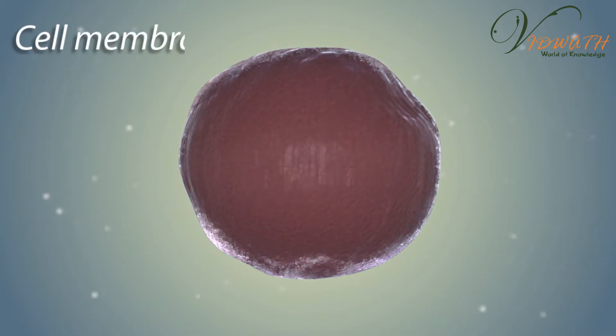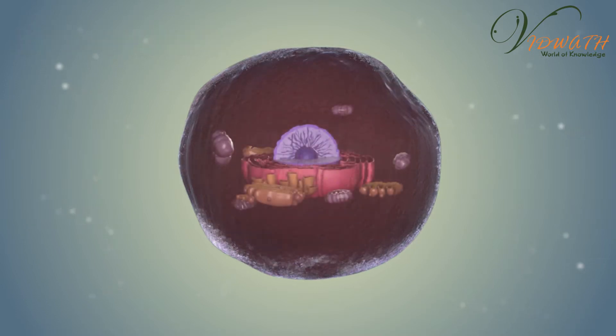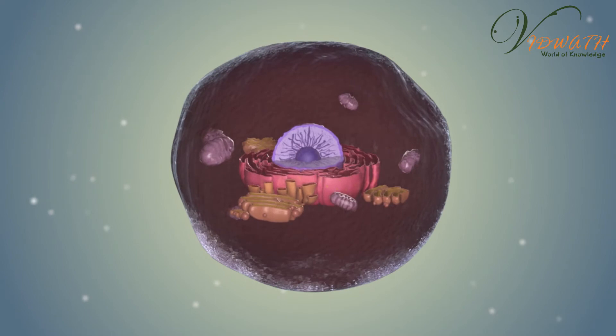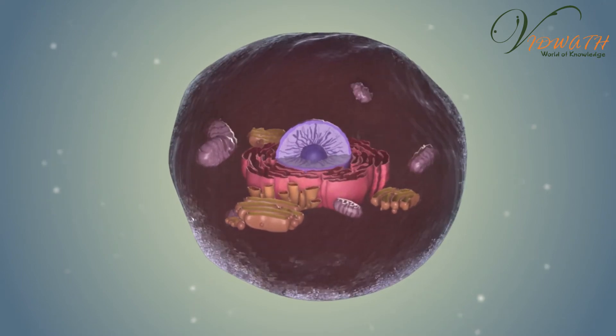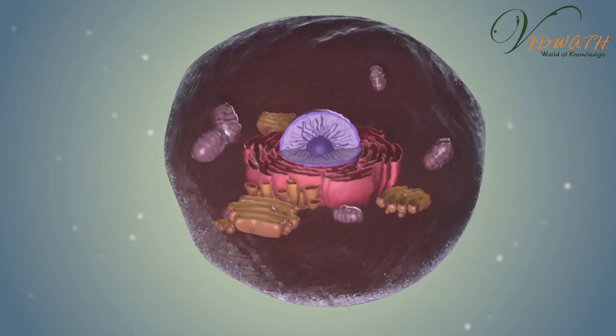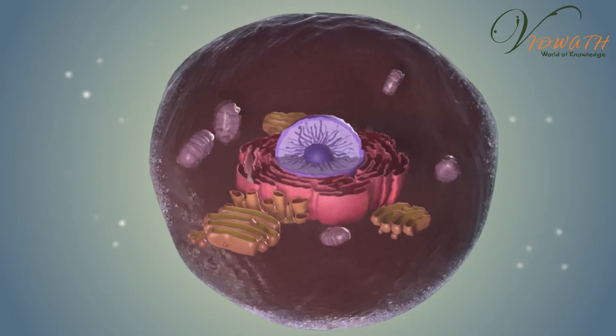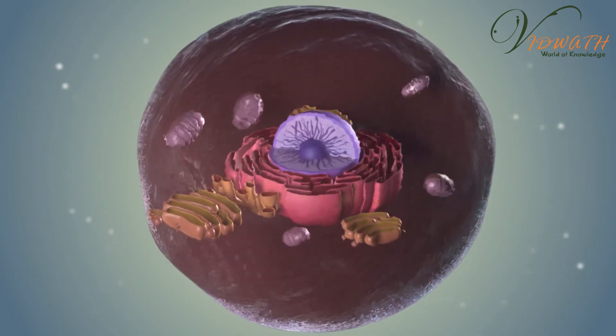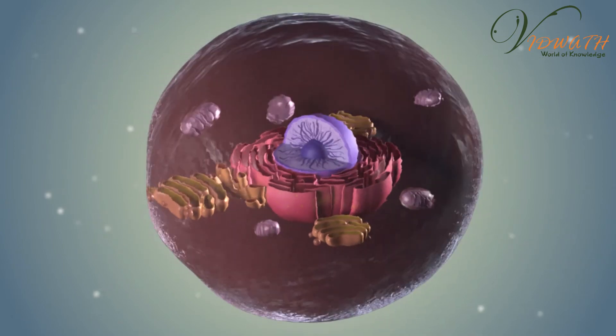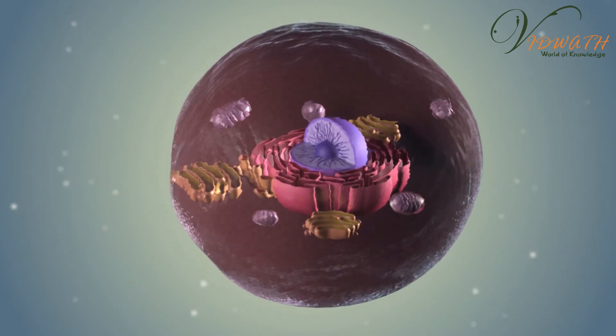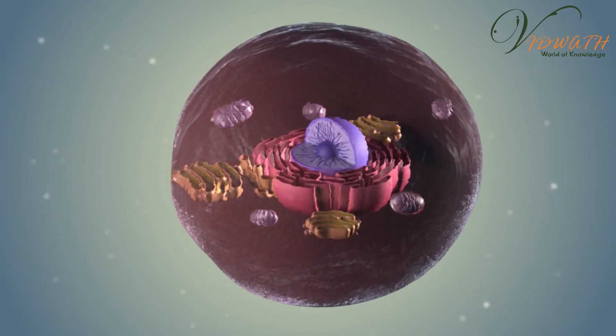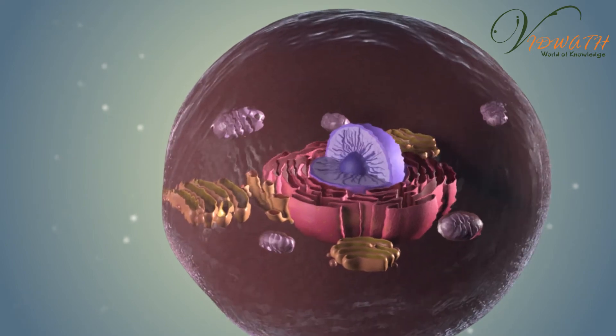The cell membrane is a fluid mosaic structure composed of a phospholipid bilayer and other important macromolecules such as proteins. The cell membrane separates the cell from the environment and allows the movement of materials in and out of the cell.